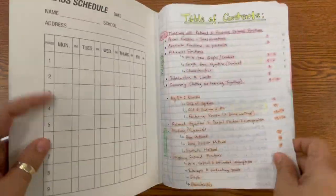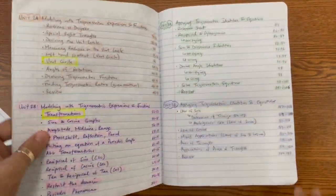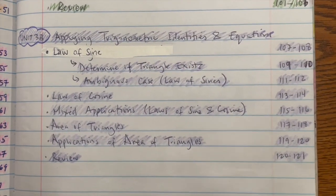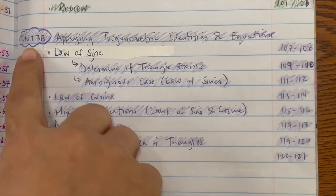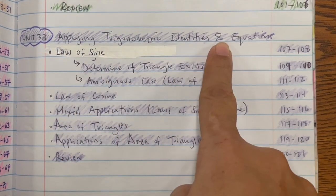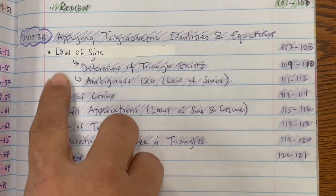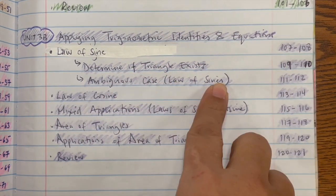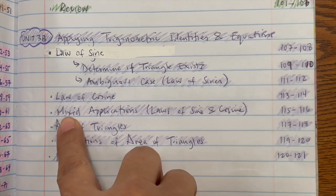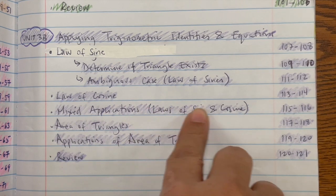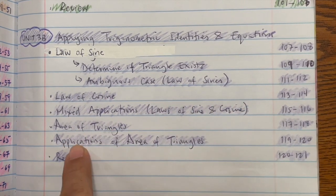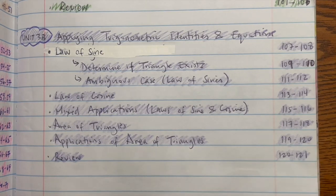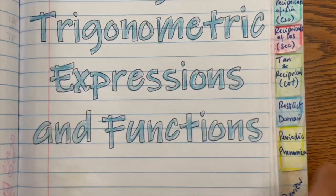All right, we're going to look at Unit 3B, so go ahead and make a table of contents. Pause the video and copy that down. Unit 3B: applying trigonometric identities and equations. Same as Unit 3A — law of sine, determine if triangle exists, ambiguous case, law of sine, law of cosine, mixed applications, area of triangles, applications of area of triangles, and a review. Pause the video and copy that down.